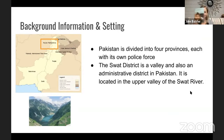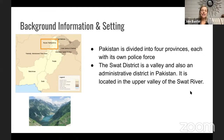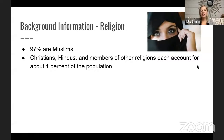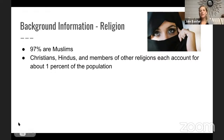This main character is originally from Pakistan, which is divided into four provinces, each with its own individual police force. She was in the Swat district — a valley and administrative district in Pakistan located in the upper valley. About 97% of people in this region are Muslim, and the remaining small portion are Christians, Hindus, or members of other religions. Malala wears certain things over her head as part of her religion — we'll talk about that more too.